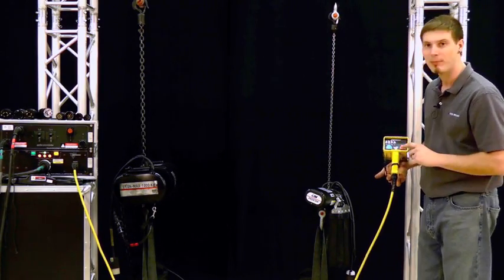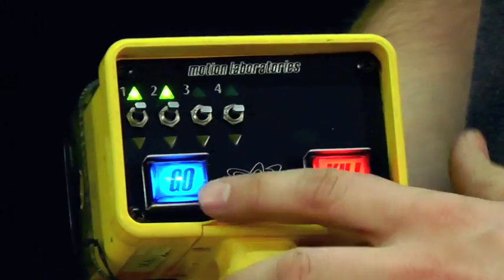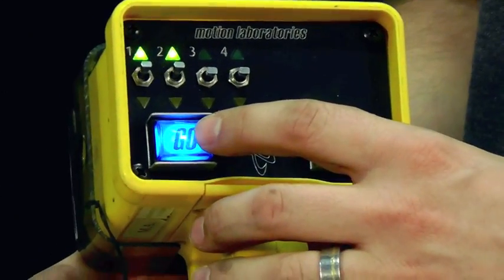I'm going to run the truss up with both motors running together. So I've selected chain motors one and two up on my control panel and I simply hit go.